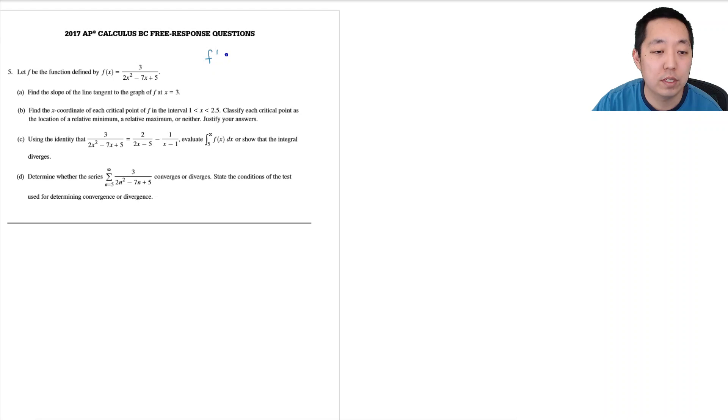Well I need to find the derivative of this first. I'm going to do quotient rule, you can do it as chain rule too. Bottom times the derivative of the top, that's 0, minus top times the derivative of the bottom.